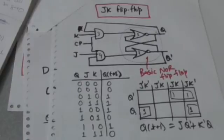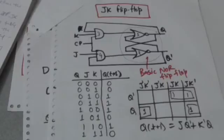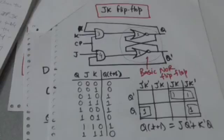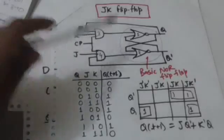This is the characteristic table of JK flip-flop. Notice that JK flip-flop behaves as RS flip-flop except in the case when both inputs J and K are equal to 1. In RS flip-flop, when both inputs R and S are equal to 1, the next state is indeterminate, because both gates of the basic NOR flip-flop have at least one input equal to 1.